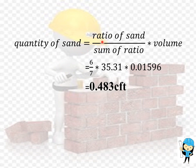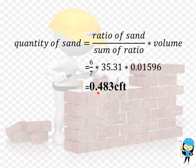The formula used for quantity of sand is ratio of the sand divided by sum of the ratio, into volume. We have taken the ratio as 1 is to 6, so the sum of the ratio is 7. The ratio of the sand is 6 and sum of the ratio is 7. The density of the sand is 35.31 and the volume is 0.01596. By multiplying these three factors we get the quantity of sand, that is 0.483 cubic feet.